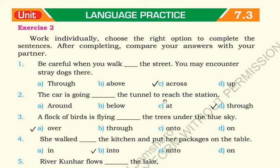Number five: River Kunhar flows towards the lake - river Kunhar بہتا ہے جھیل کی جانب، towards آئے گا یہاں۔ Number six: While waiting for my train, I took a walk around the station - میں چلا سارے station میں گھوما، around لگے گا یہاں۔ Number seven: A formation of twelve airplanes flew over our houses - 12 جہاز ہمارے گھر کے اوپر سے اڑے۔ Number eight: The door was locked so I shoved the letter under the door - دروازے کے نیچے سے - under لگے گا۔